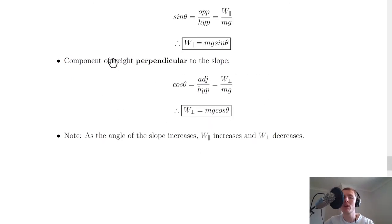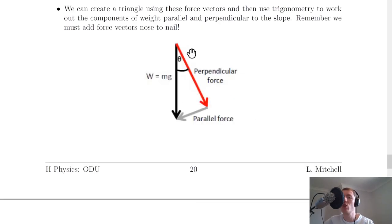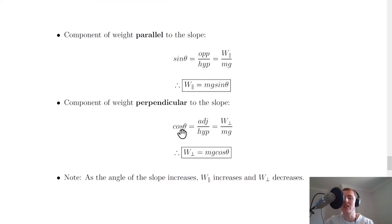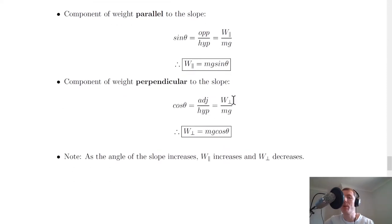Similarly, to find the component of weight perpendicular to the slope, we use cos θ. Cos θ equals the adjacent side over mg, so cos θ equals W perpendicular over mg. Cross multiplying, the perpendicular component of the weight equals mg cos θ.